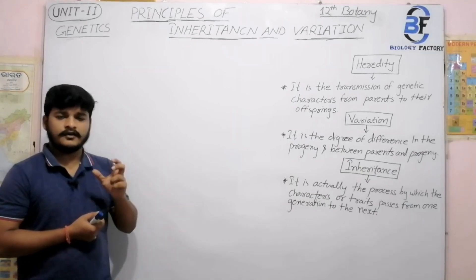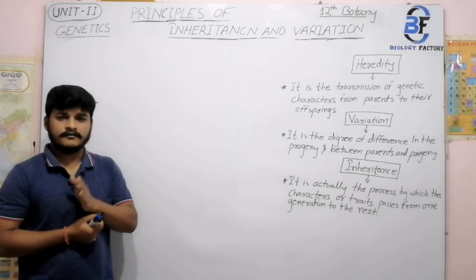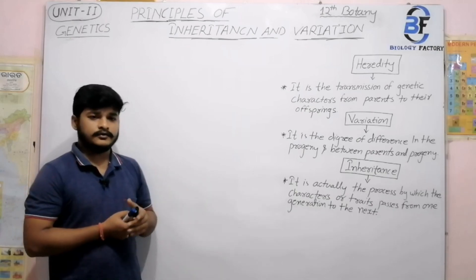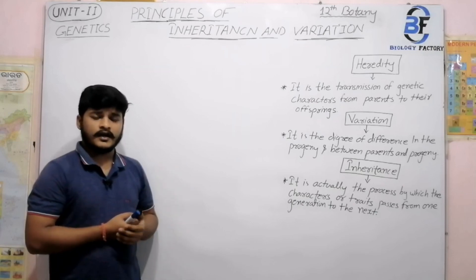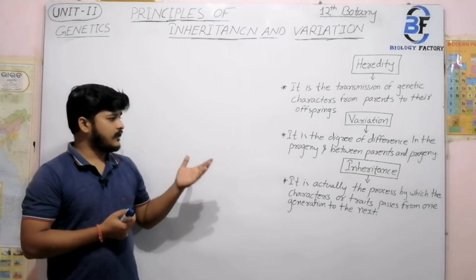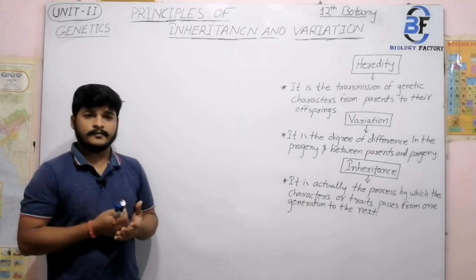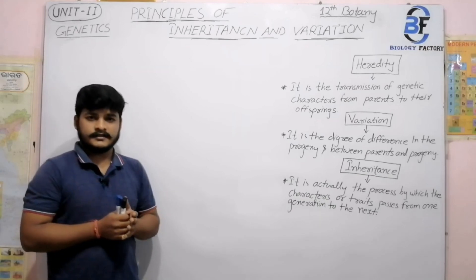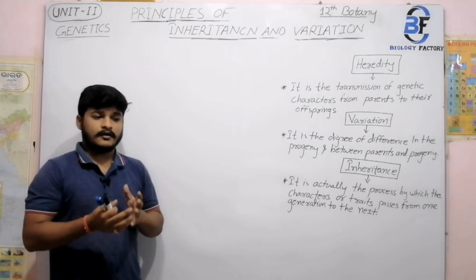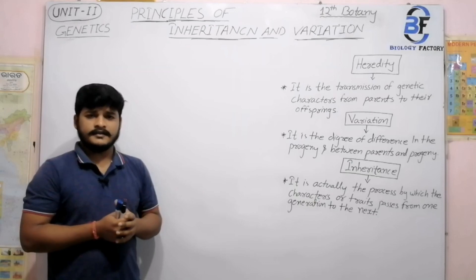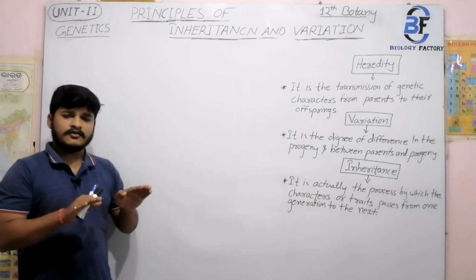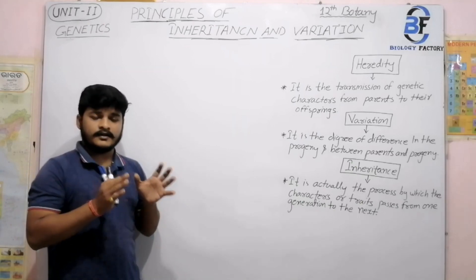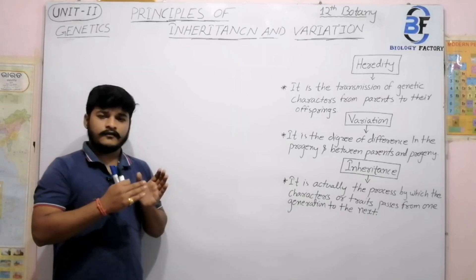The total unit of genetics consists of three types of chapters. The first is the principles of genetics and variation. The second is the molecular basis of genetics, in which you will study about the structure of DNA and the structure of RNA. The third is evolution, in which you will study how small, gradual, and irreversible changes are expressed from one generation to another from an evolutionary point of view. These topics are quite interrelated to each other, so focus on every part of this series.